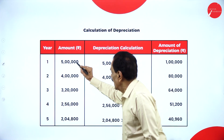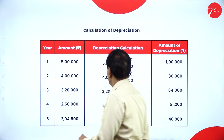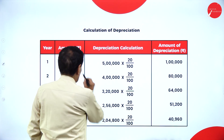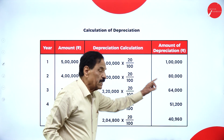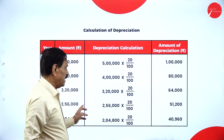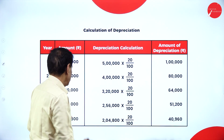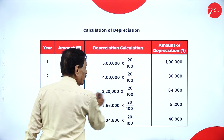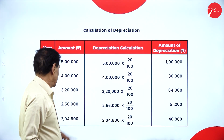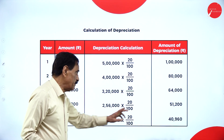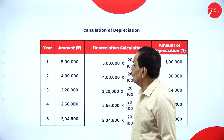Calculation of depreciation using the written down value method at 20%. Year 1: 5,00,000 × 20% = 1,00,000; balance 4,00,000. Year 2: 4,00,000 × 20% = 80,000; balance 3,20,000. Year 3: 3,20,000 × 20% = 64,000; balance 2,56,000. Year 4: 2,56,000 × 20% = 51,200; balance 2,04,800. Year 5: 2,04,800 × 20% = 40,960. These are all the depreciation figures.